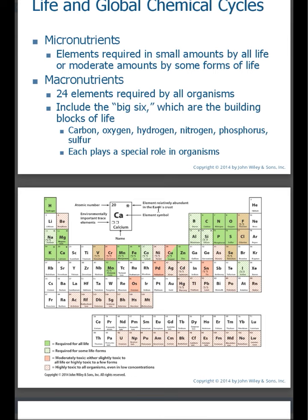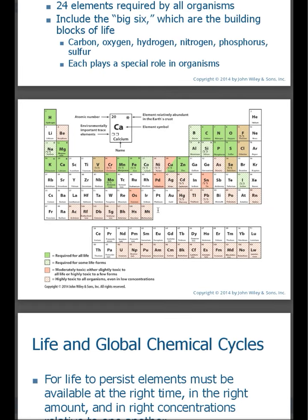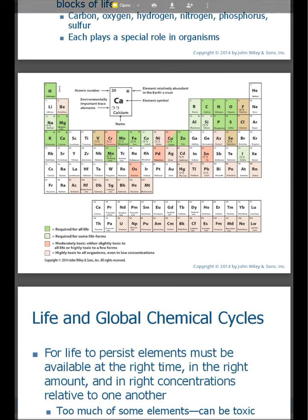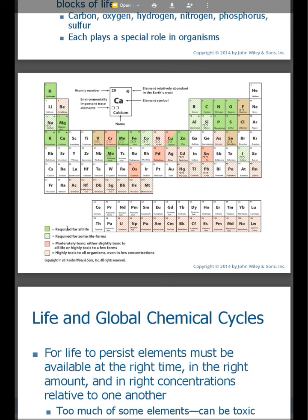When we look at the biogeochemical process, we'll take a look specifically at the first five elements. Each of these elements play a role in organisms. On the periodic table, you'll notice that elements such as hydrogen, potassium, calcium, magnesium, manganese, iron, and so on are required for all life — they're shaded in green. Some elements with dashed shading are required for some life forms, not necessarily all. Elements in orange can be dangerous — they're moderately toxic to organisms. And then the highly toxic elements appear in the dashed orange. Notice copper — part of it is required for life, and part of it can be moderately toxic.